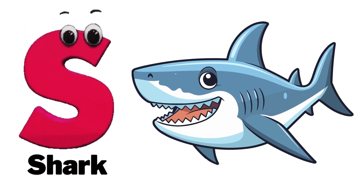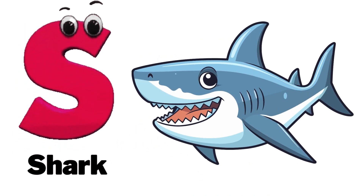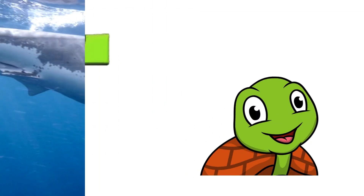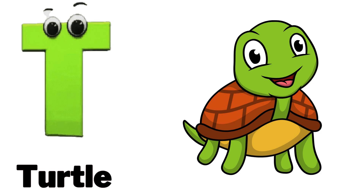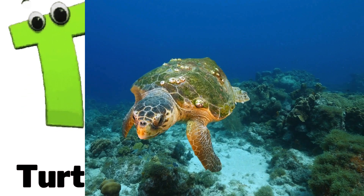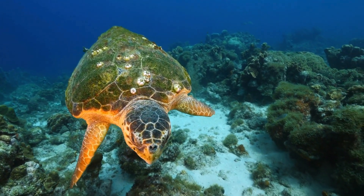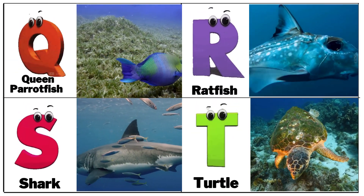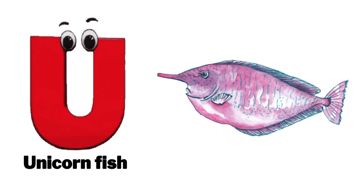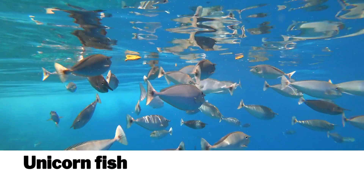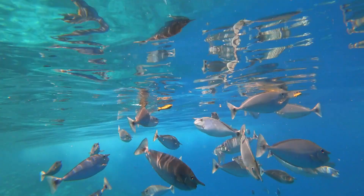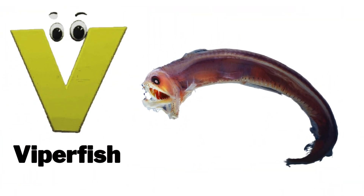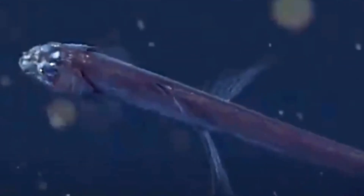S is for starfish, starfish. T is for turtle, turtle. U is for unicorn fish, unicorn fish. V is for blackfish, blackfish.